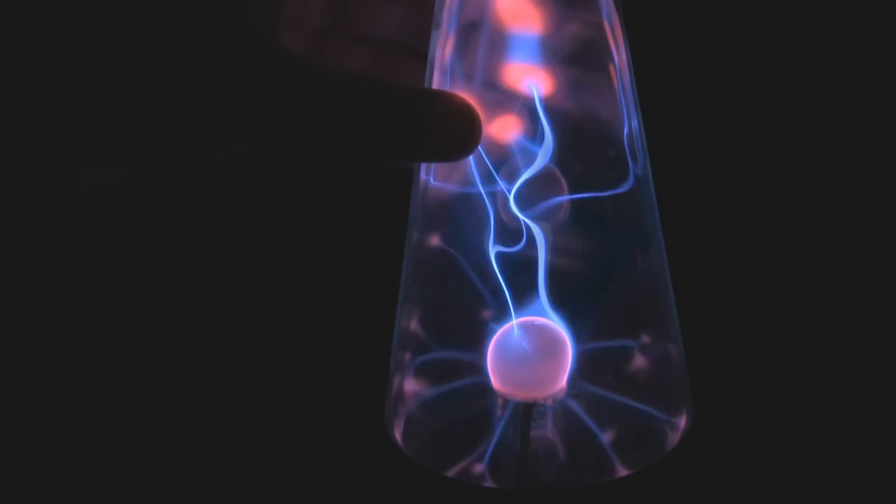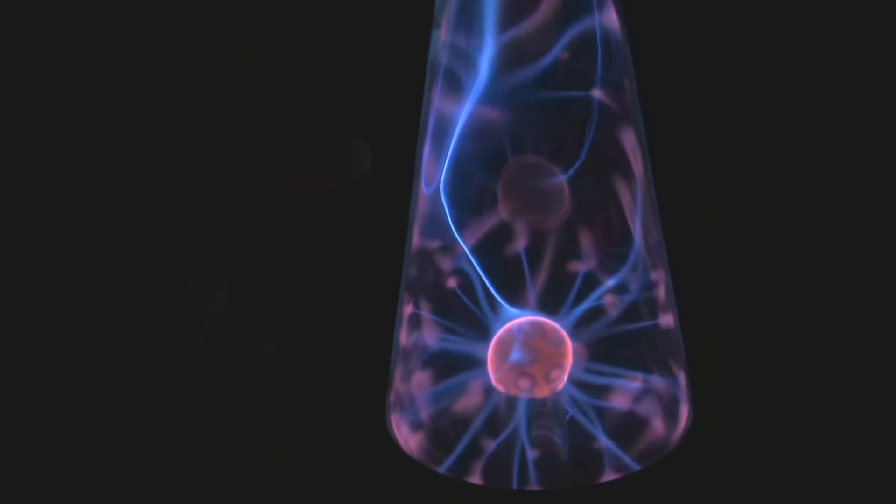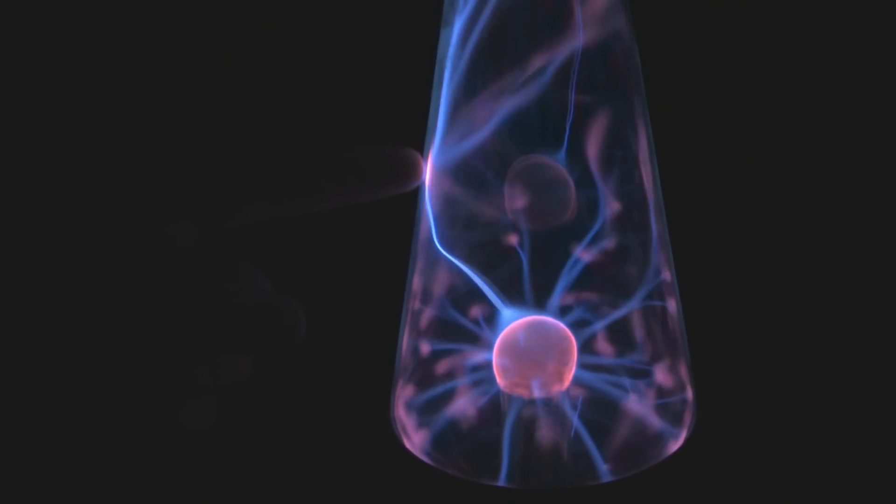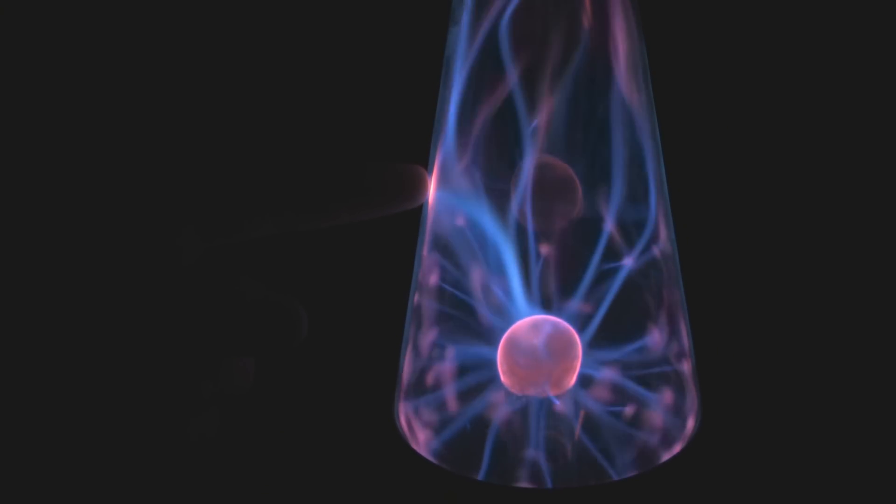An interesting thing about plasmas is they generate their own magnetic field. And this is why we observe it as streams or filaments coming out to the edge of the plasma lamp.